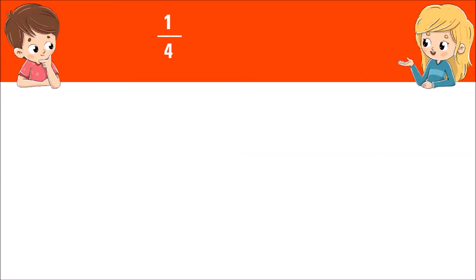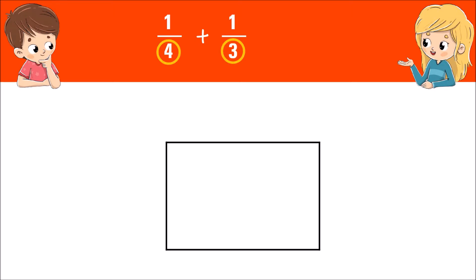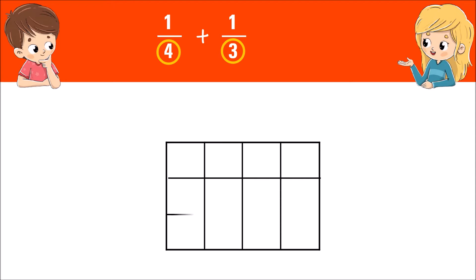For example, let's add one fourth plus one third. The denominators are four and three. We need to make four columns and three rows, or four rows and three columns depending on your preference. The result is 12 boxes, which is now your new denominator — the same as when you multiply the two denominators.